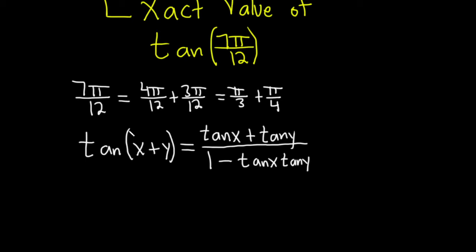Okay so let's apply this to our problem here. We have the tangent of 7π over 12. That's equal to the tangent of, and we worked it out, it's π over 3 plus π over 4. So I'm going to write it as π over 3 plus π over 4.